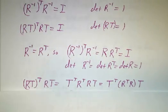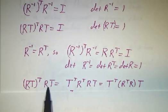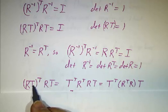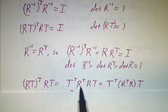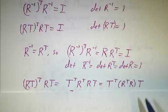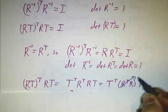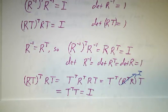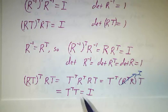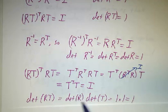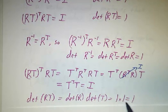For the product RT: taking (RT) transpose times RT gives T transpose R transpose R T. Since R transpose R is the identity, this reduces to T transpose T, which is also the identity because T is in the group. And the determinant of RT equals the determinant of R times the determinant of T, which is one times one, which is one.